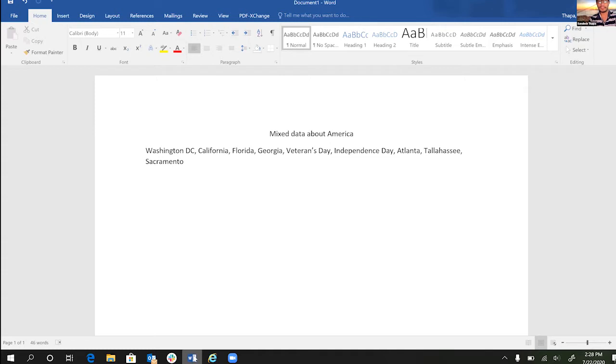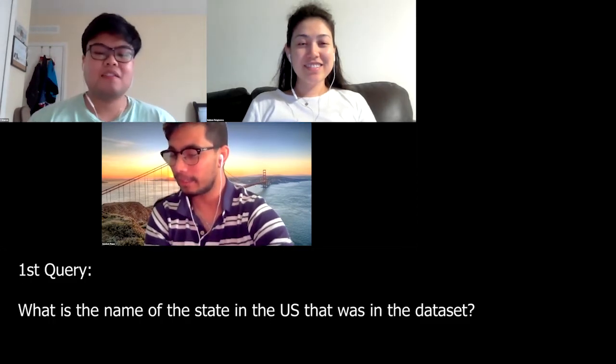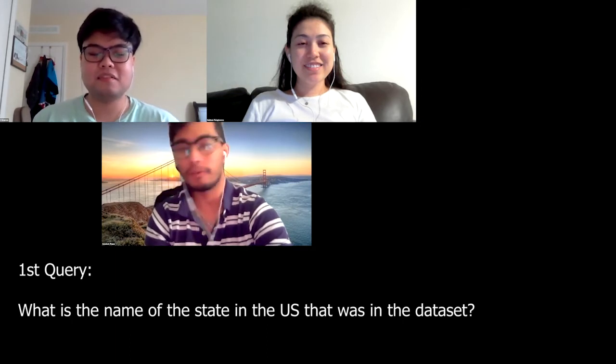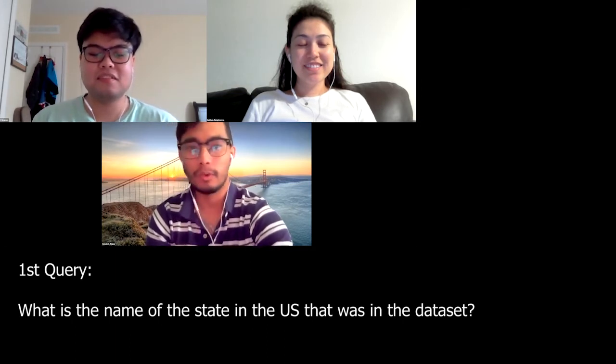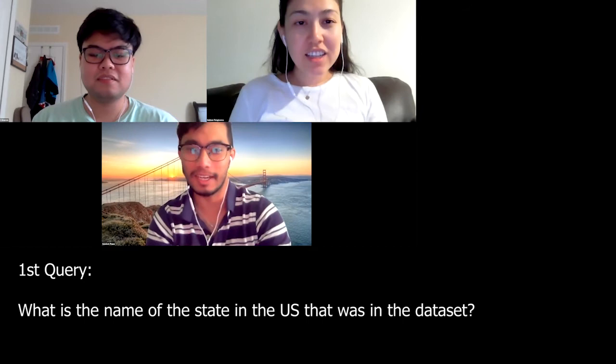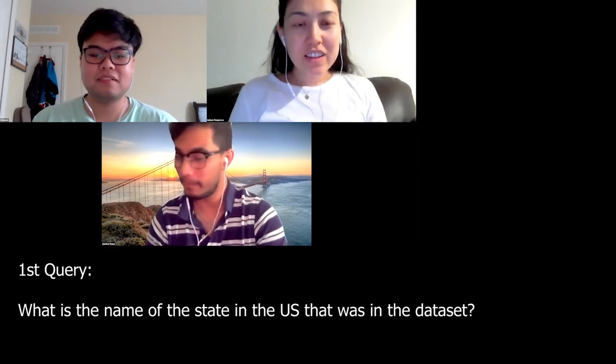Now we're moving on to the second game, which features mixed data about America. First question: give me the names of all the U.S. states in the data. The states are Georgia, Florida, California, and Washington.